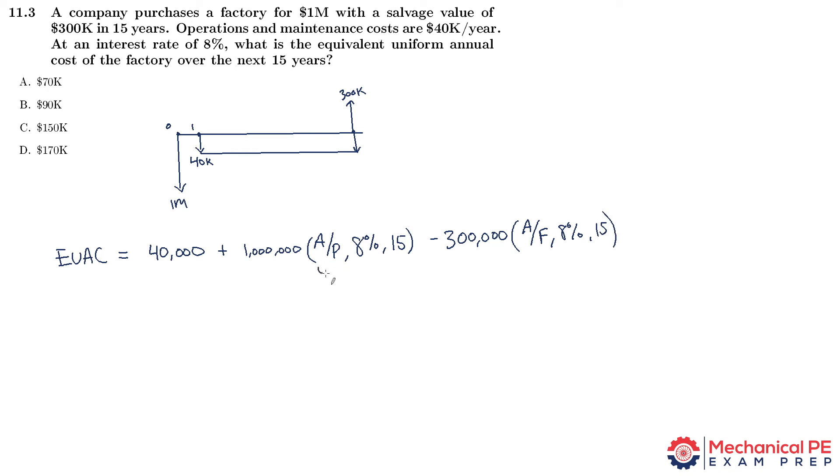Now we look up in the factor table and find these values. The A/P value is 0.1168, and the A given F value is 0.0368. If you multiply that all together and add it up, you get a uniform annual cost of $145,760, which is closest to answer choice C.